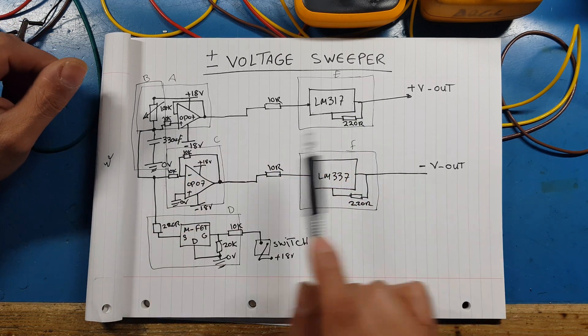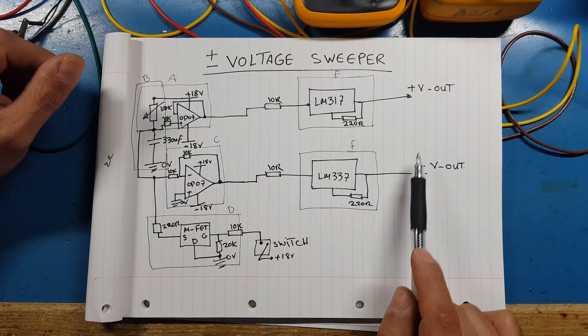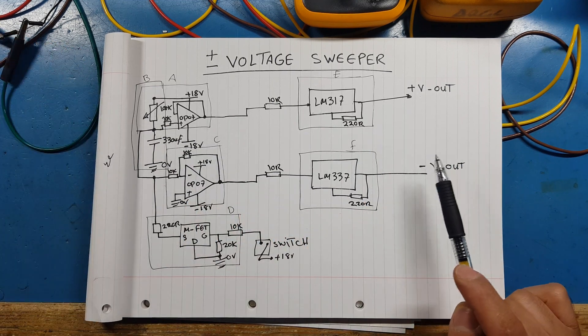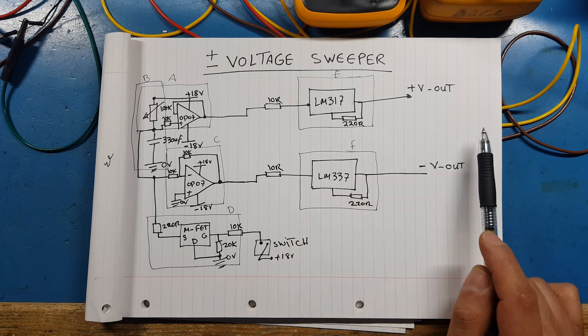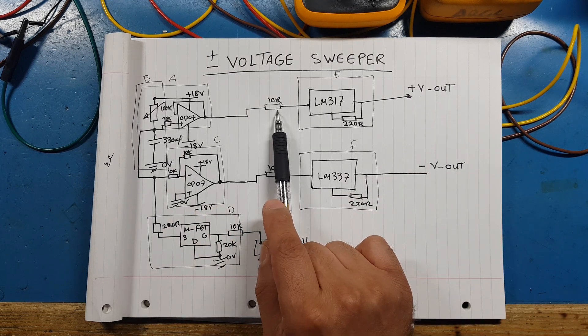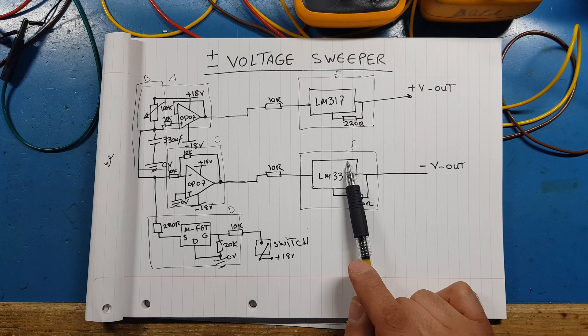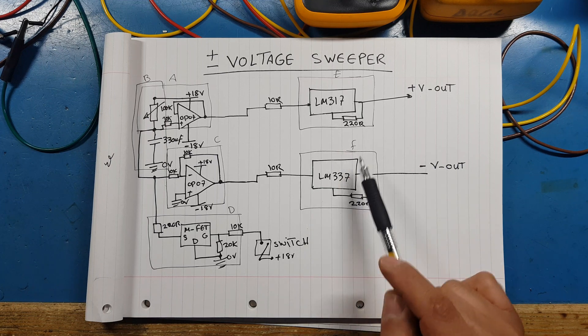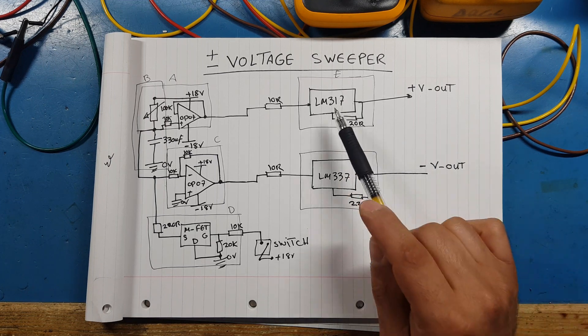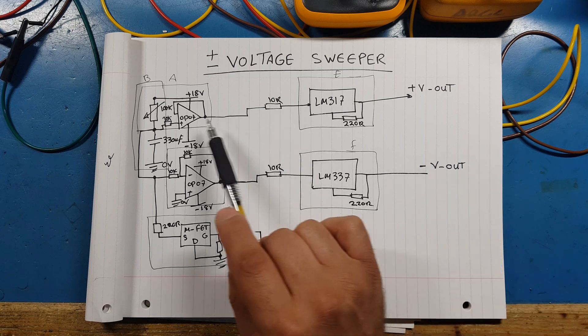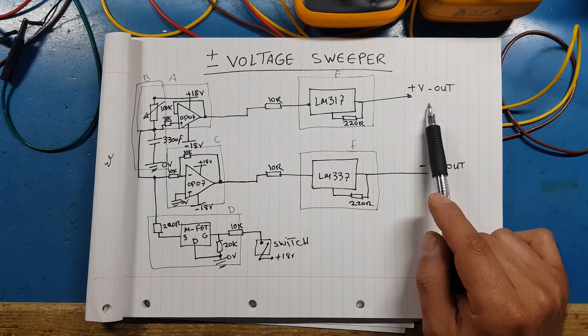And what that generates in the output of the LM317 and 337 is sweeps the voltage. So whatever we feed in, zero volt obviously the minimum these two voltage regulators can provide is plus and minus 1.25, and whatever we feed is going to be plus that on the output.